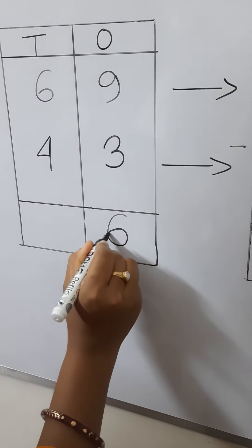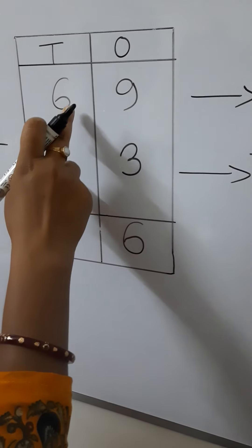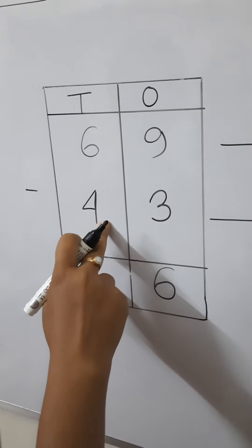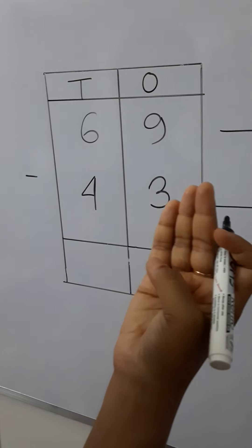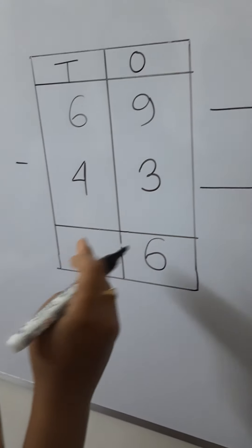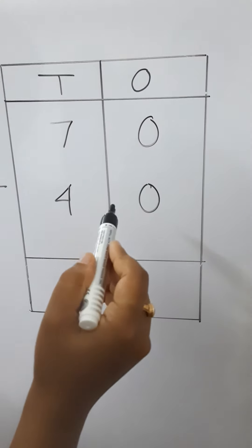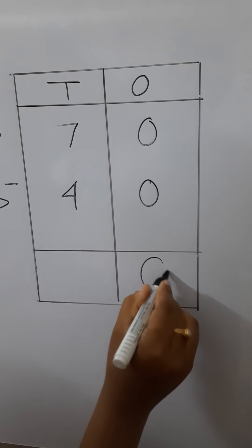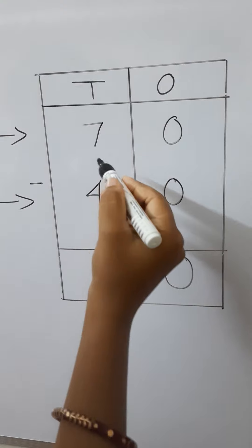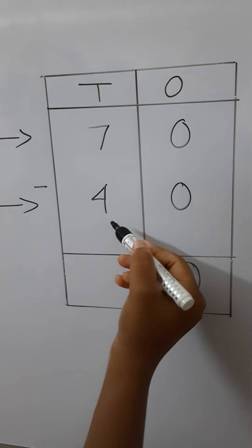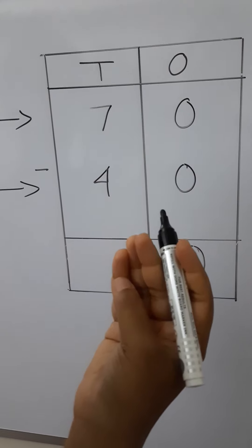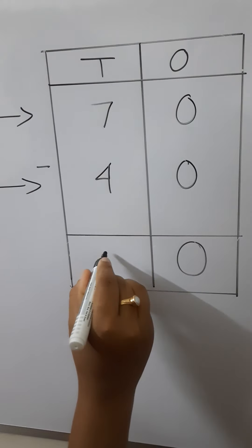So the actual difference of 69 minus 43 is 26. Now for the estimate subtraction: ones place has 0 minus 0, which gives 0. Tens place: counting up from 4 to 7 gives 3, so we write 3. The estimate difference of 70 minus 40 is 30.